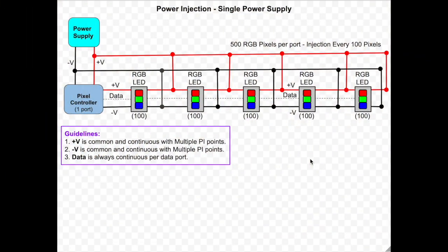Let's take a look at the single power supply example first. In this example, each RGB LED represents 100 pixels for a total of 500 pixels. Power injection is added after each 100 pixels. The guidelines for using power injection with a single power supply are easy and straightforward. Plus V is common and continuous with multiple power injection points. Which means you can connect the plus V from the power supply to the plus V on the pixels at multiple power injection points.